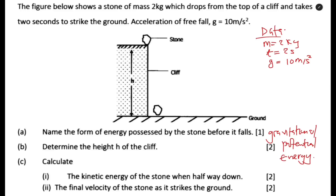Determine the height of the cliff. How are you going to determine the height with what you are given? You are given mass, time, and acceleration due to gravity. Since you are given acceleration of free fall, you look at the formulas and find that we are going to use: X = ut + ½at².